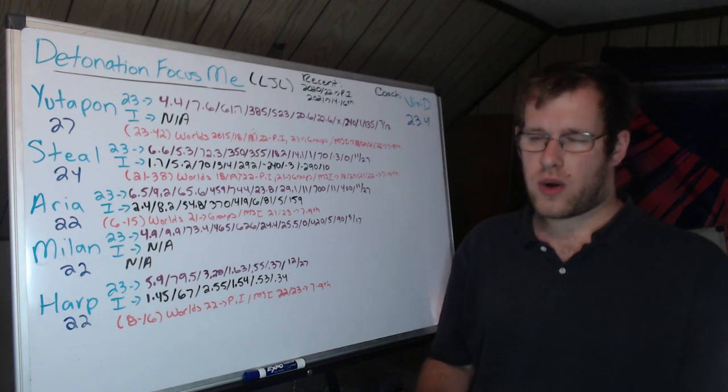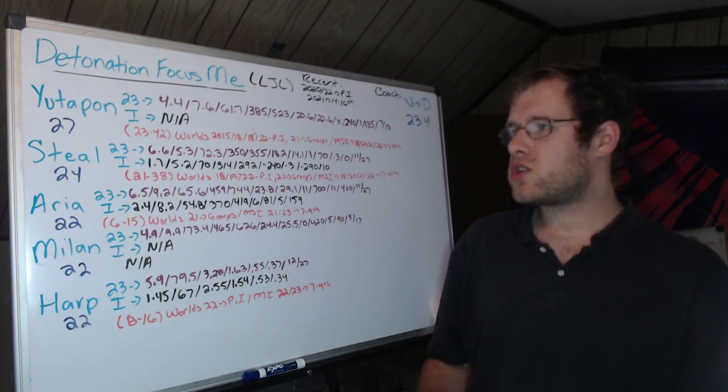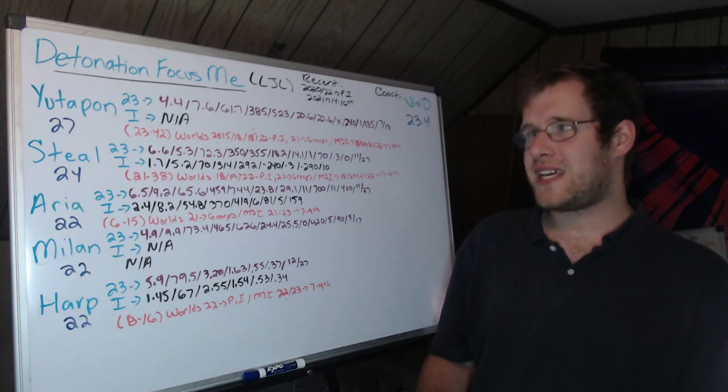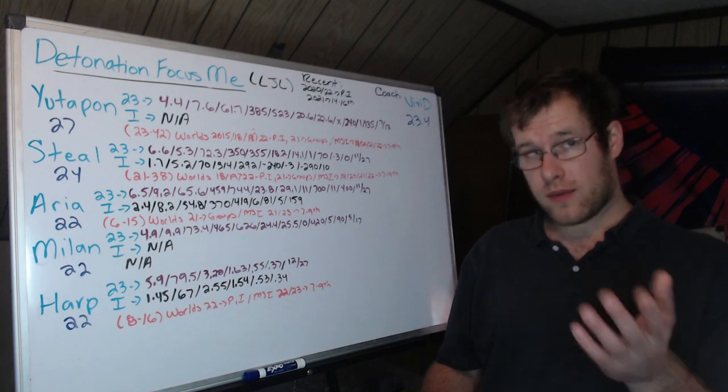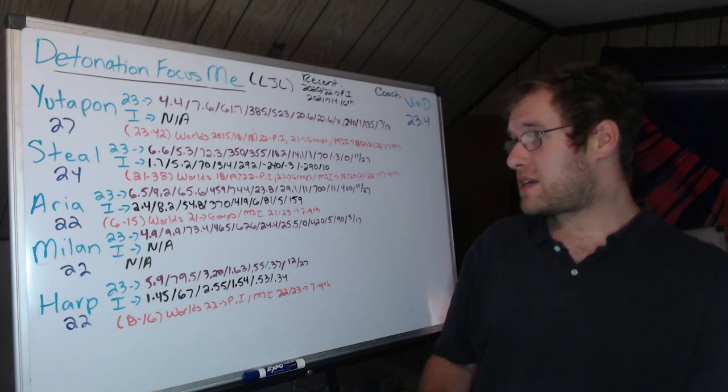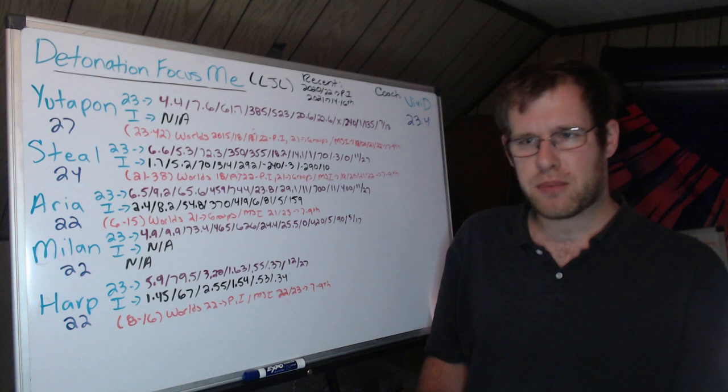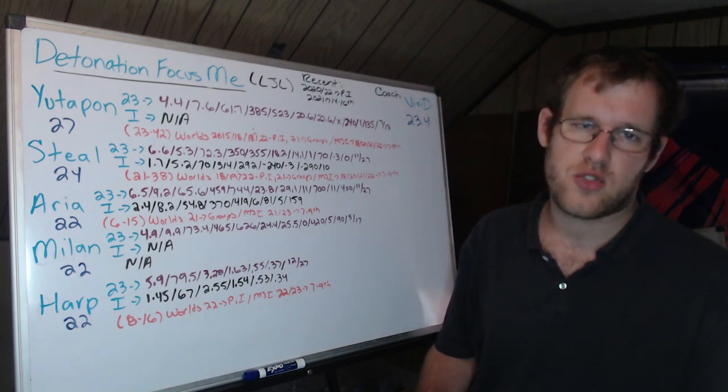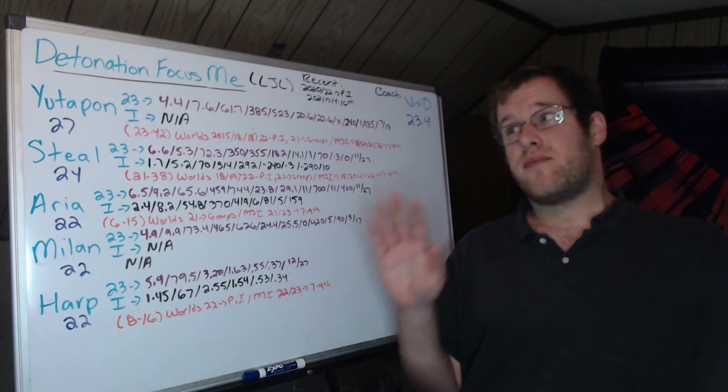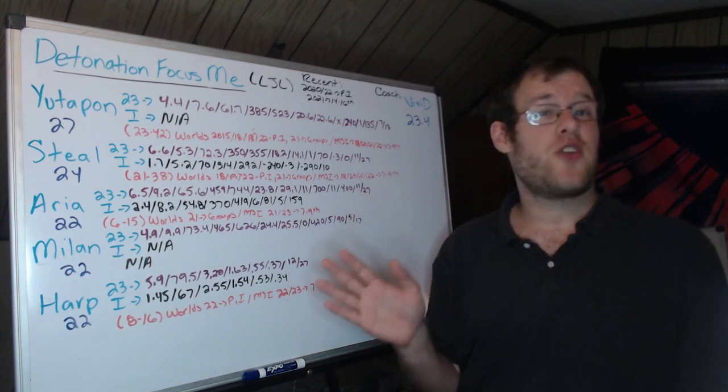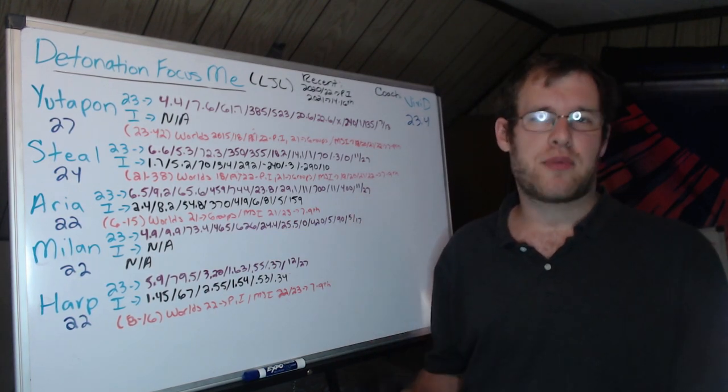Over his career, he's 23 and 42 at international events. World's 2015, 18, 19, and 22, he was out in play-ins. 21, out in group stage. MSI 19, 20, 21, and 22, out in play-ins. Never got to the rumble stage or main event. So that's an interesting conundrum we have here where Utapon's in top lane.